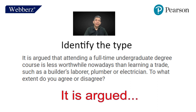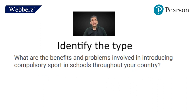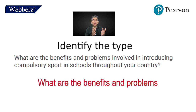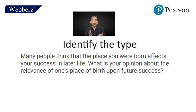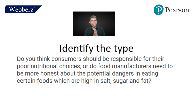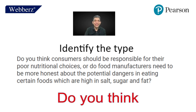The third type is 'benefits and problems' — when the essay asks about benefits and problems, you can clearly identify it. The fourth type: 'Many people think that the place you were born affects your success in later life. What is your opinion?' — This is a 'many people think' type. The fifth type starts with 'do you think,' which makes it identifiable as a 'do you think' essay.